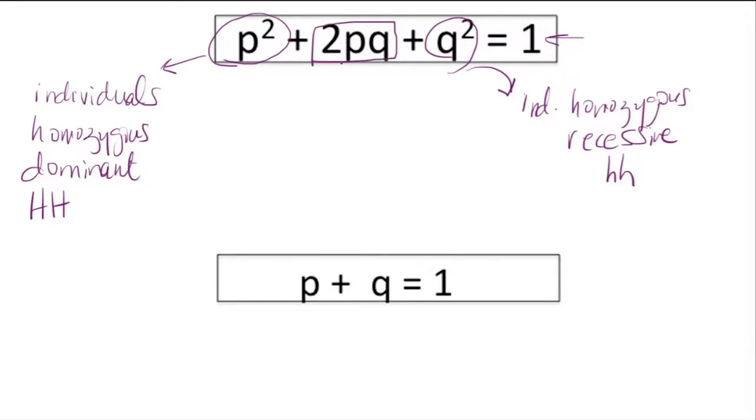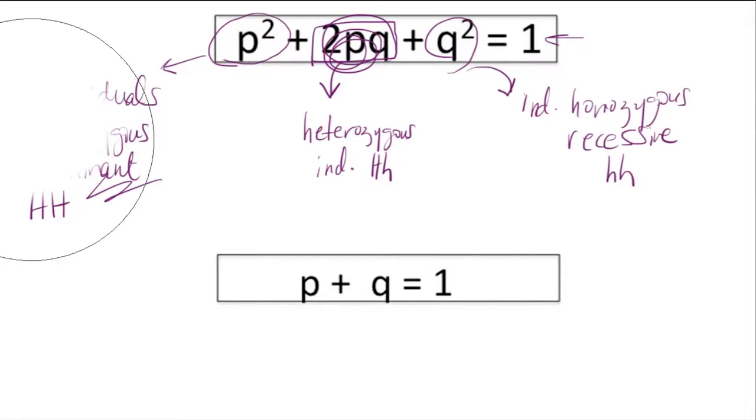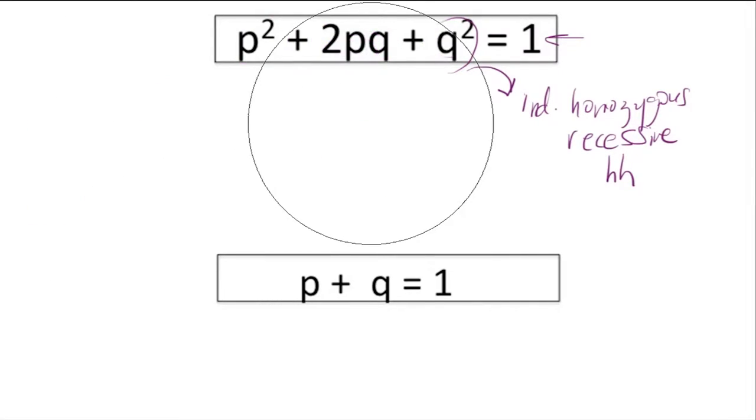In our example, we're talking about individuals who have the genotype hh. This representation here, 2pq, are the heterozygous individuals, which are big H little h. That's what the question is asking us. If we know a certain gene or allele frequency in the population, then we can estimate or determine the others. Let me now clear the slide here so that we have a clean area to work with.